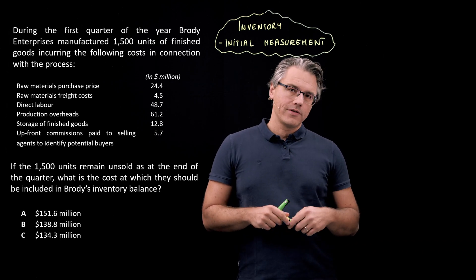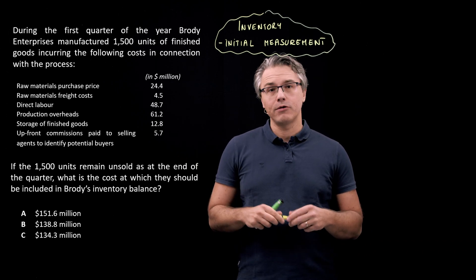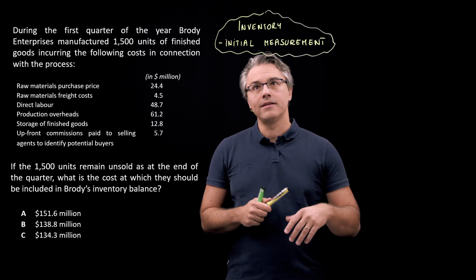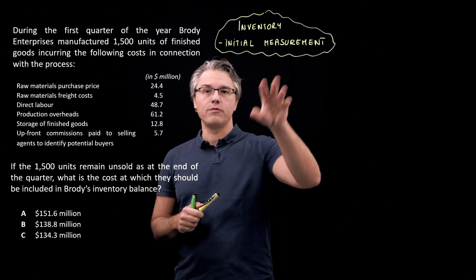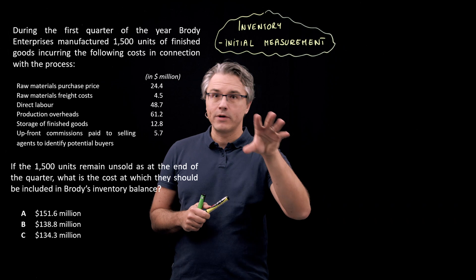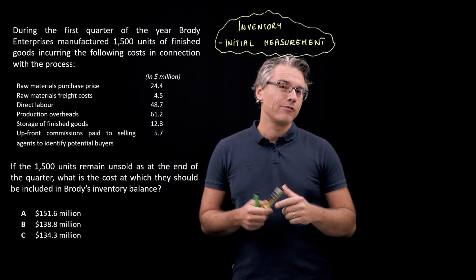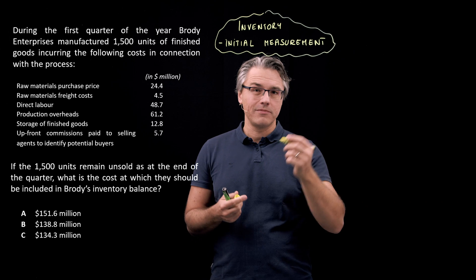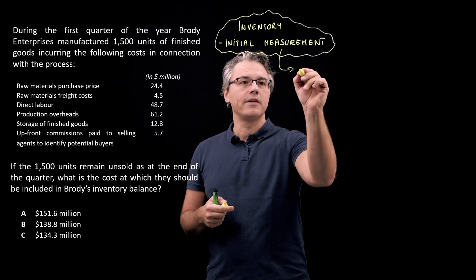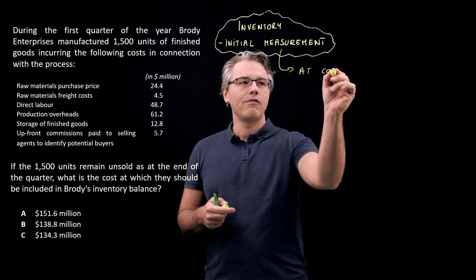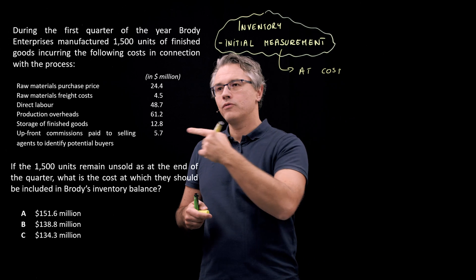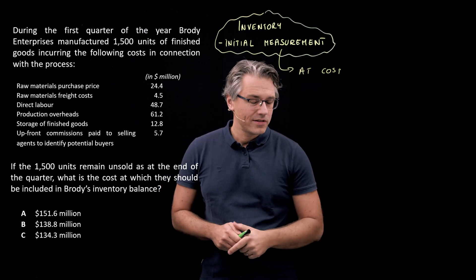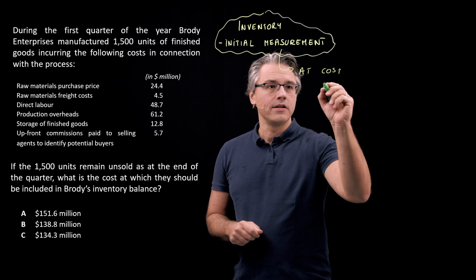So we know what costs have been incurred. Now the question is, which of those should be included in the inventory's initial measurement when it comes into the balance sheet? The general rule is that initial measurement of most items that enter the balance sheet should be done at cost. However, not all of these costs will be included. So what does cost actually include?